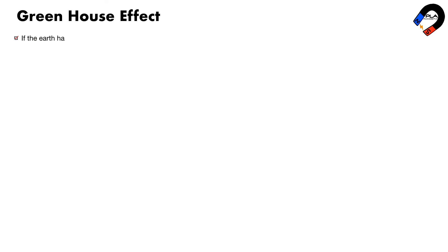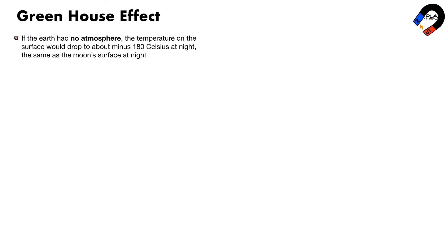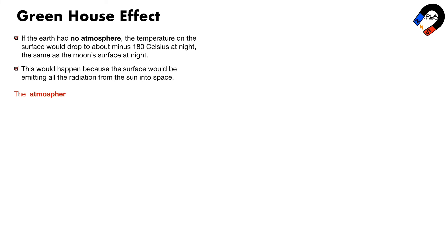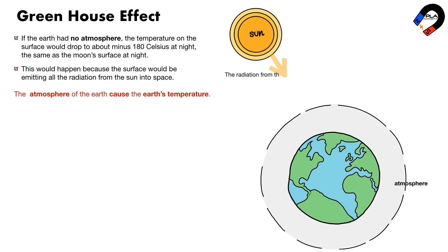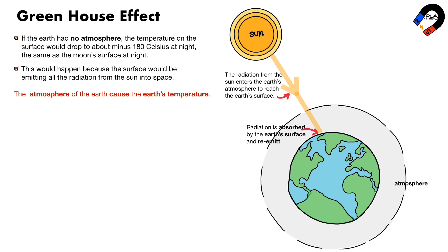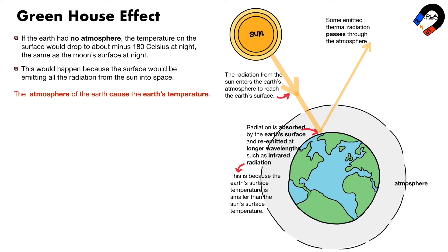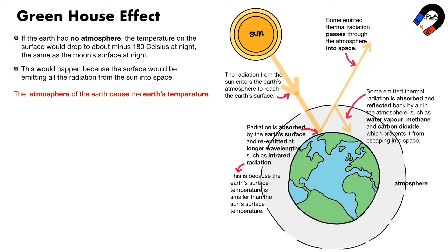Greenhouse effect: if the Earth had no atmosphere, the temperature on the surface would drop to about minus 18 degrees Celsius at night, the same as the moon's surface at night. This would happen because the surface would be emitting all the radiation from the sun into space. The radiation from the sun enters the Earth's atmosphere to reach the Earth's surface. Radiation is absorbed by the Earth's surface and re-emitted at longer wavelengths, such as infrared radiation, because the Earth's surface temperature is lower than the sun's surface temperature. Some emitted thermal radiation passes through the atmosphere into space; some is absorbed and reflected back by gases in the atmosphere, such as water vapor, methane, and carbon dioxide, which prevents it from escaping into space. These processes make the Earth warmer than it would be if these gases were not in its atmosphere.